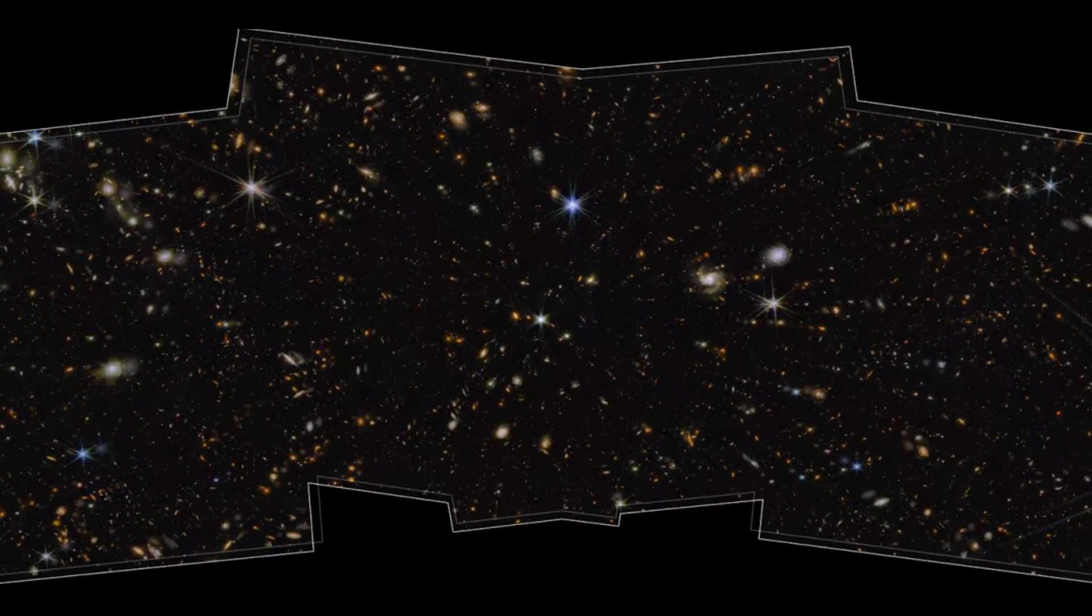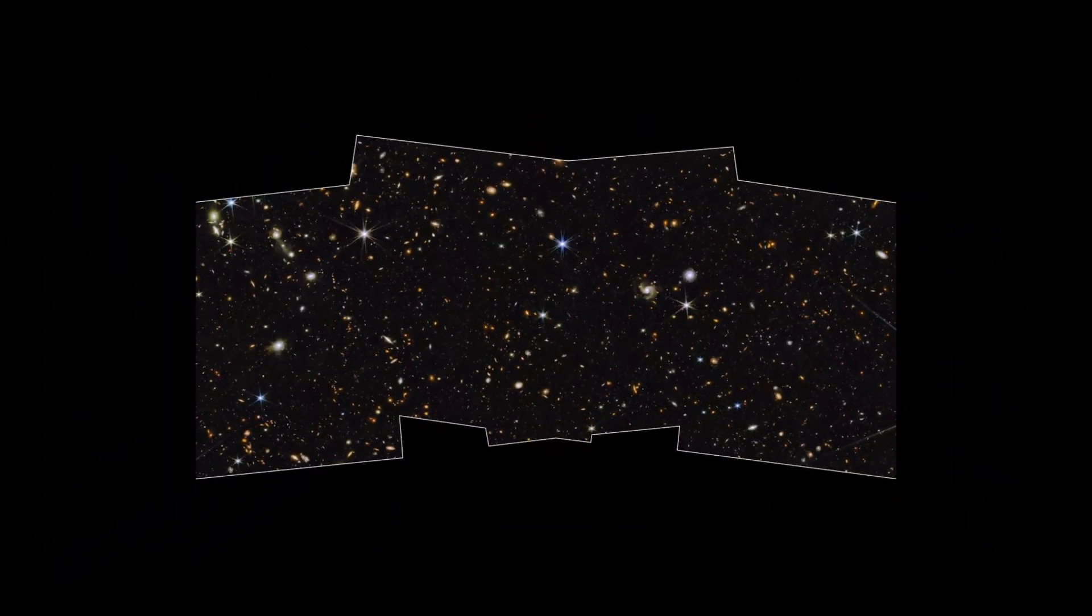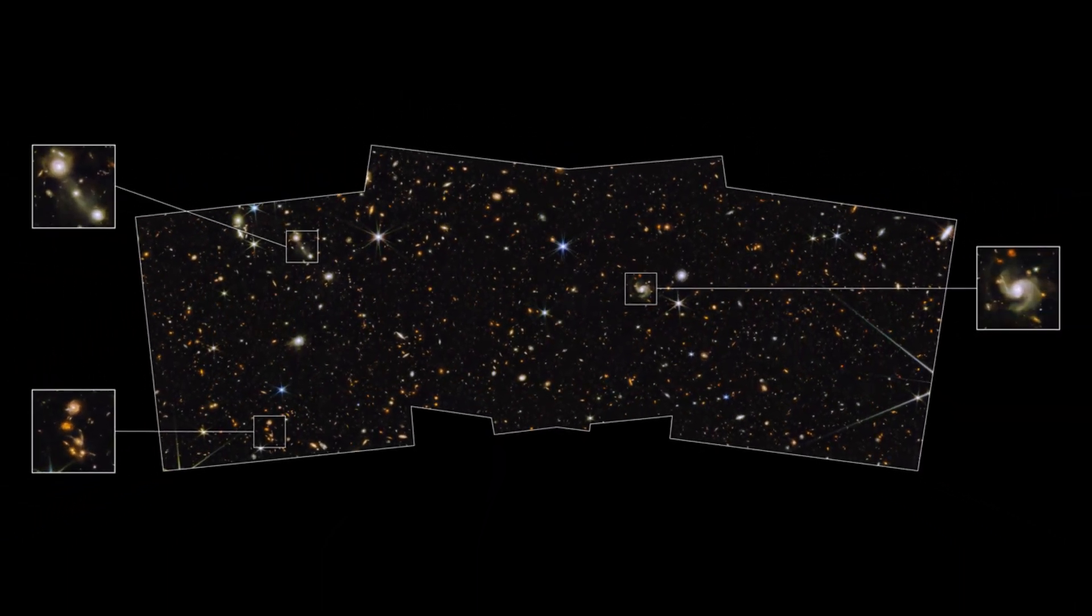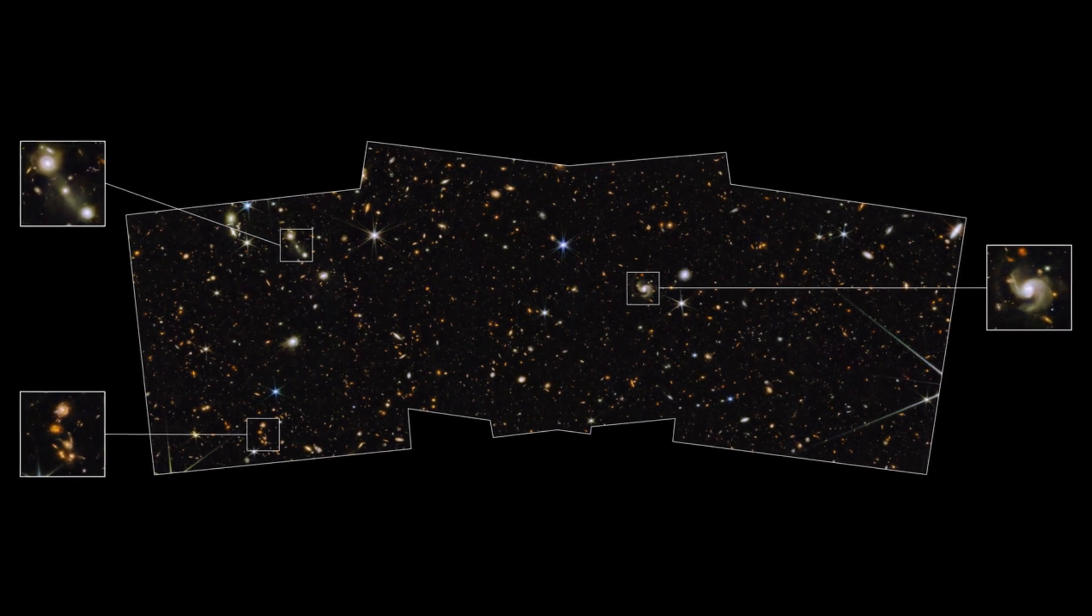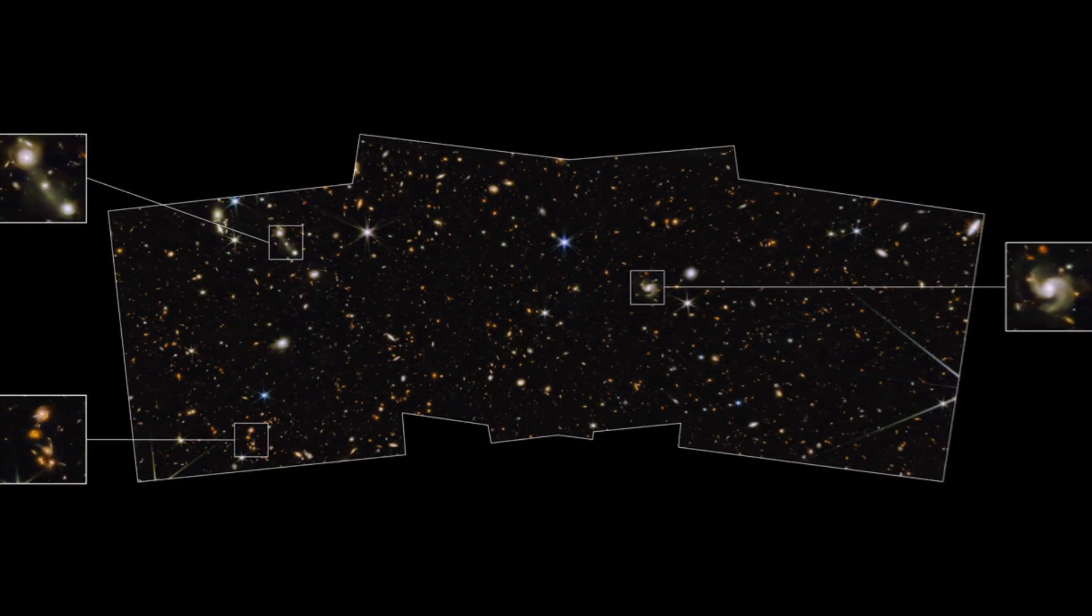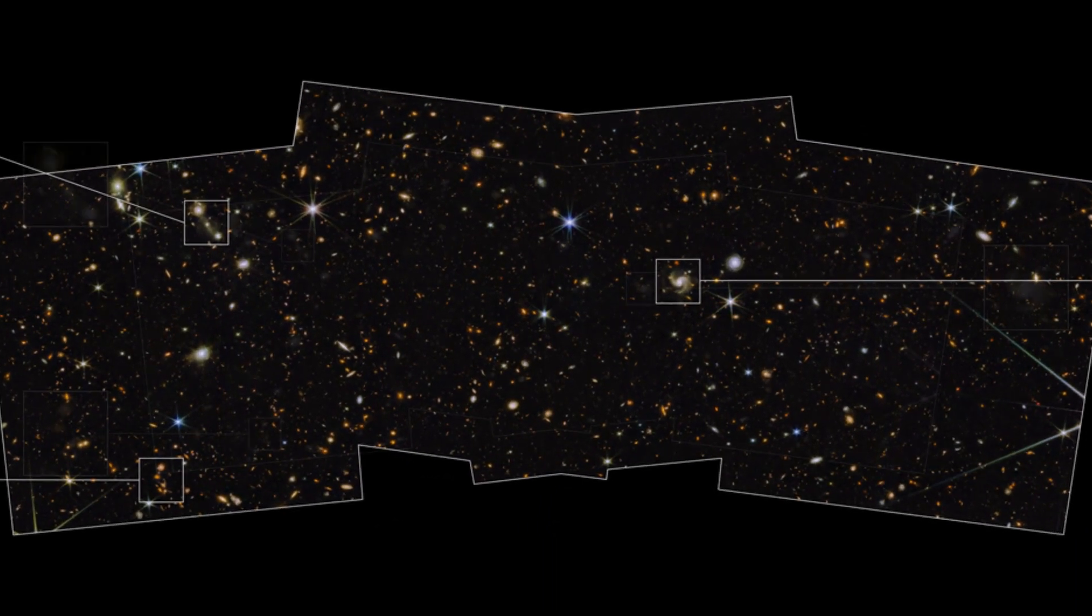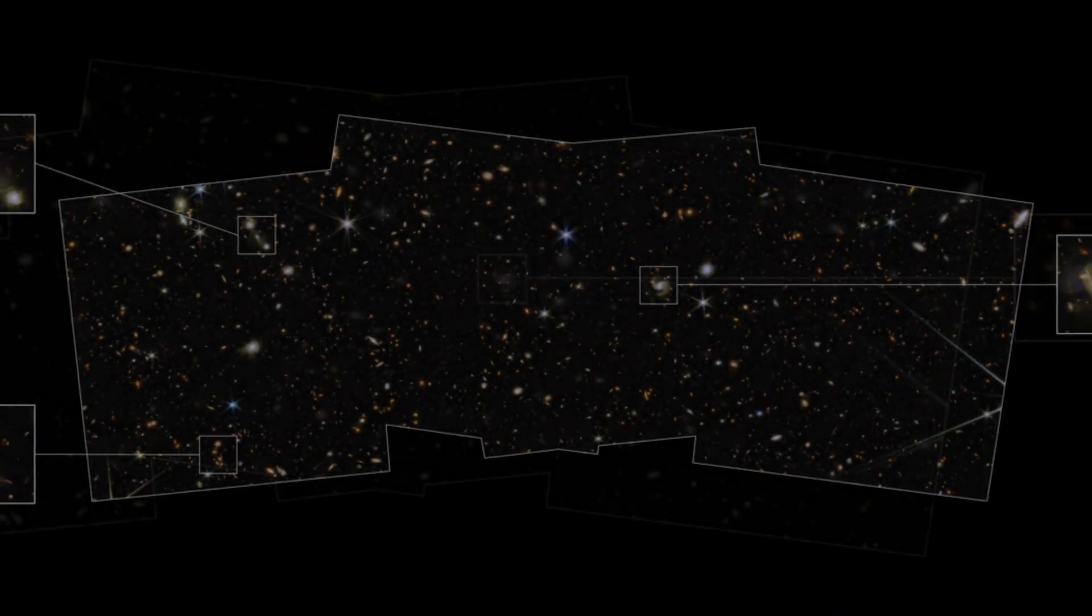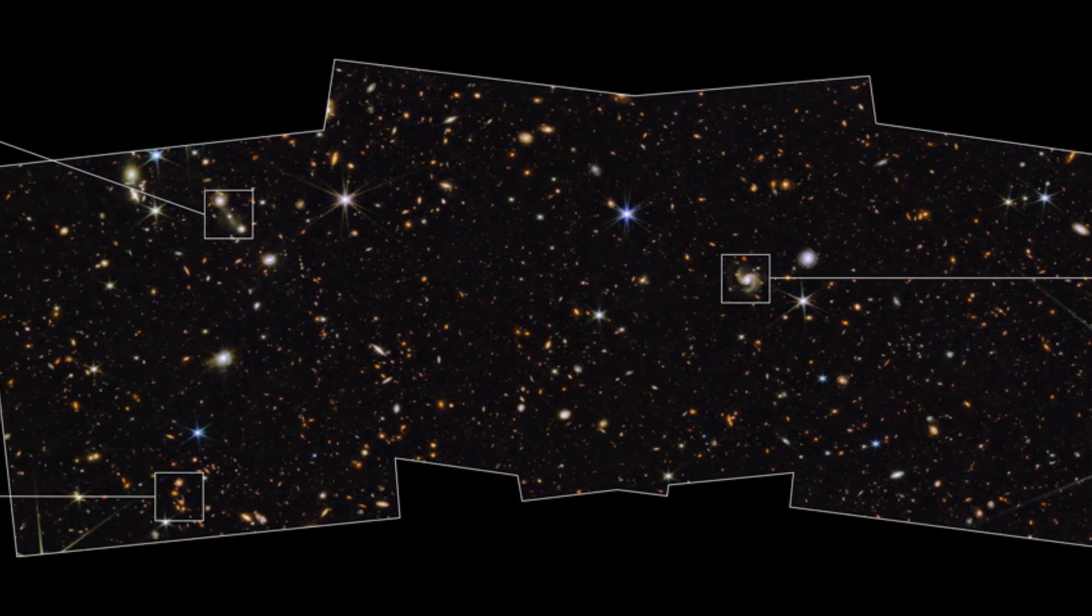The new image from the prime extragalactic areas for reionization and lensing science program, taken by the James Webb Space Telescope, also shows a number of interacting galaxies. The glittering sight was caught by Webb's near-infrared camera, which covers 2% of the region covered by the full moon. The image was created by combining 8 different hues of near-infrared light taken by NIRCAM with 3 different colors of ultraviolet and visible light collected by the Hubble Space Telescope.